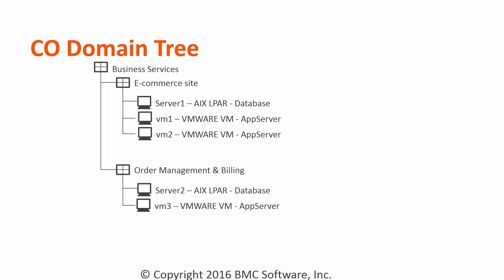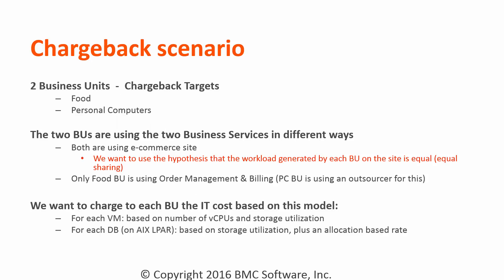This is a typical CO domain tree of a hierarchy used for a chargeback. You have a company named Business Services, with an e-commerce site running on a database and two application servers, and an order management and billing running on a database and another application server. Two business units are using these services.